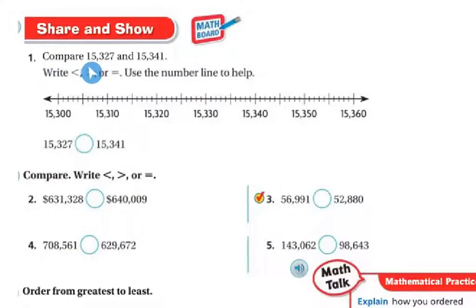All right, let's share and show. So now we're going to compare 15,327 and 15,341. And we're going to write less than, greater than, or equal sign, and we're going to use the number line to help. So first 15,327. So if I'm going to mark that, we're going to go 15,000, there's 300, 310, 320, and 330. So I know it's going to be in between these. So 20, 21, 22, 23, 24, 25, 26, 27. So right there is going to be this first number.